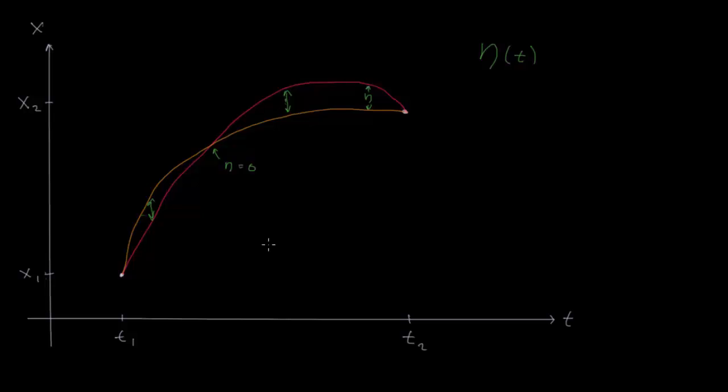So we need to use this function that we're calling eta to describe the difference between these two paths. Maybe one way we could define eta would be the orange x(t) minus the pink x(t). So this orange curve here is an x(t), it has a position x at every position in time. And then the same for this pink one. So it's the difference between these two functions at each point in time. Now if we rearrange this a little bit, we could say that any path, some arbitrary path, this orange path in this case, equals the path, the true path here, this pink path that we've said is the true path, plus this eta function, which also depends on t.